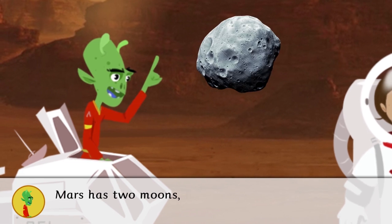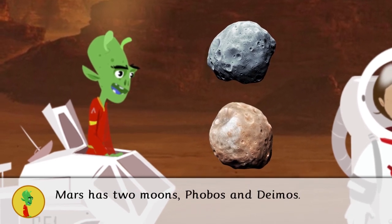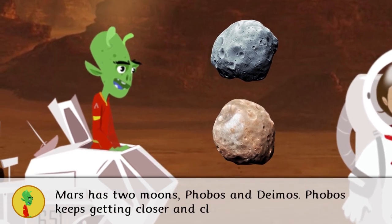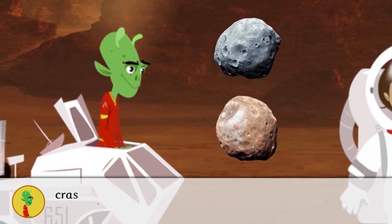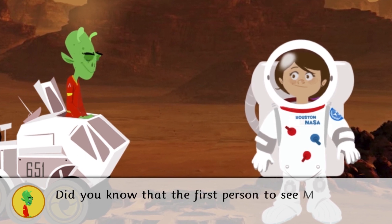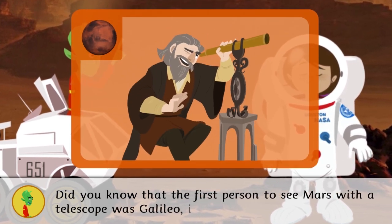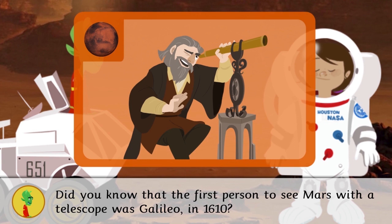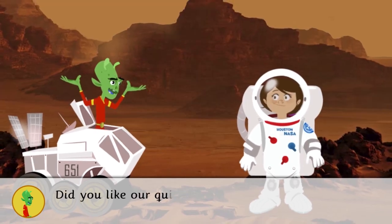Mars has two moons, Phobos and Deimos. Phobos keeps getting closer and closer and will eventually crash into Mars. Did you know that the first person to see Mars with the telescope was Galileo in 1610?